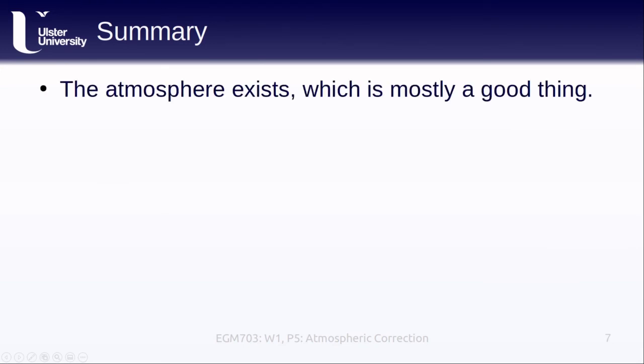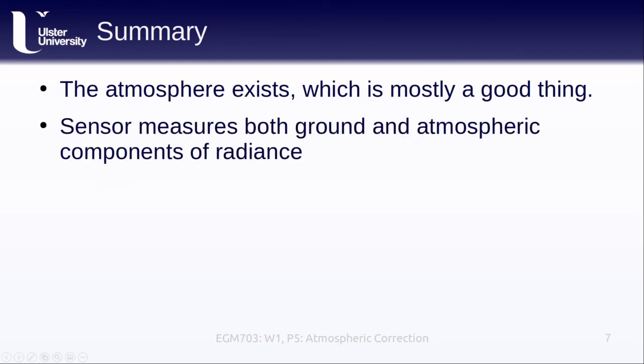In this lesson, we've learned that the atmosphere is something that exists, which is great for life on Earth, even if it does make remote sensing more challenging. This is because a sensor above the atmosphere is measuring both ground and atmospheric components of radiance, which means that if we want to study what's happening on the Earth's surface, we have to somehow correct for the atmospheric component.